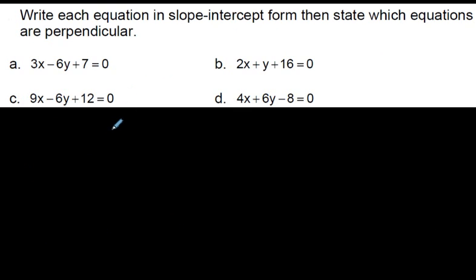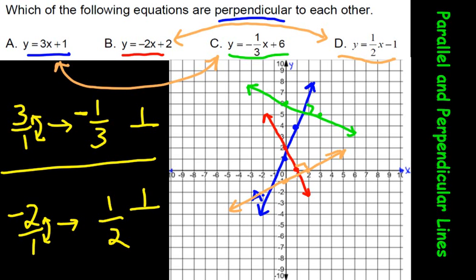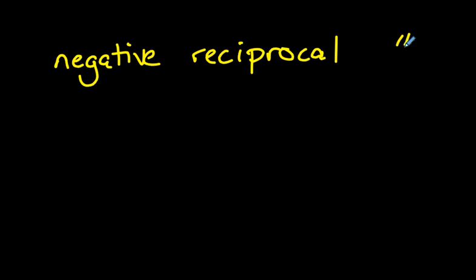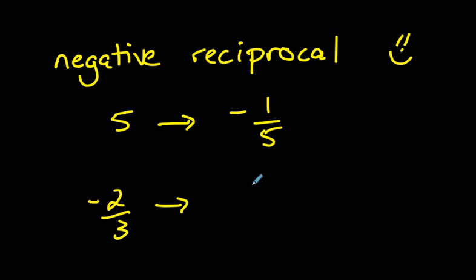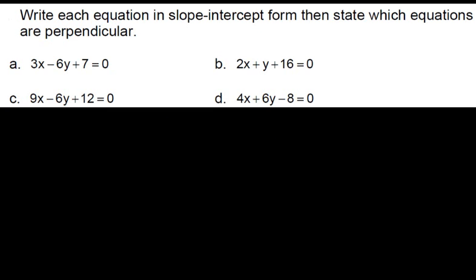We now know that a perpendicular slope is going to be a negative reciprocal. So if I gave you a 5, the negative reciprocal of that would be negative 1 fifth. If I gave you a negative 2 thirds, if you were to give me the negative reciprocal, you would flip it and change the sign. It would be 3 over 2. So, it's not so bad.